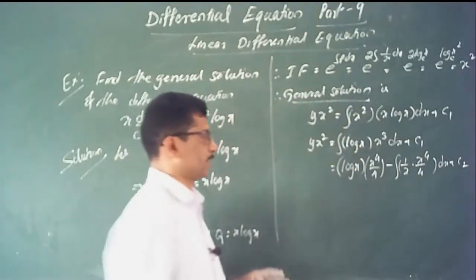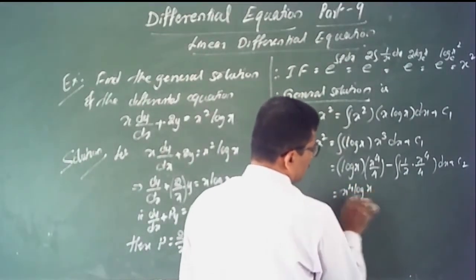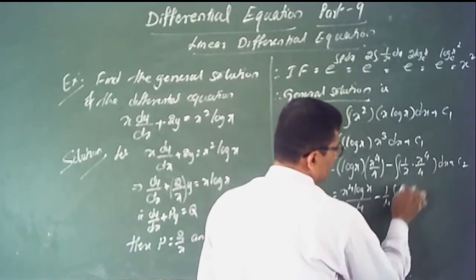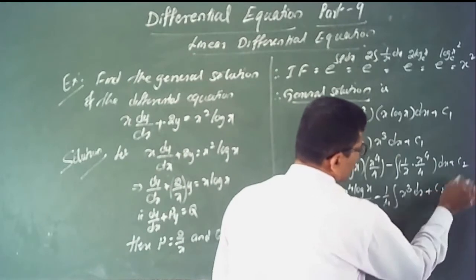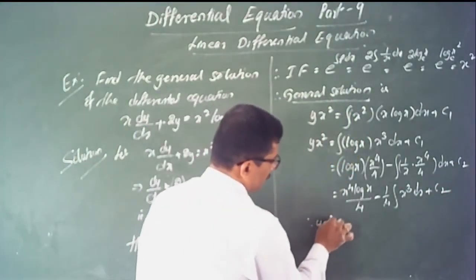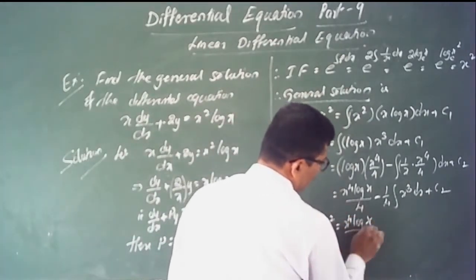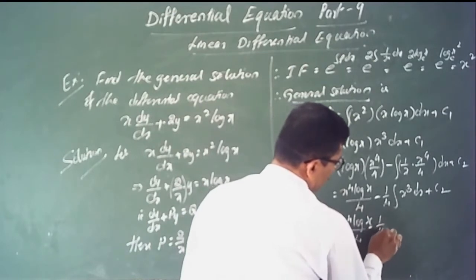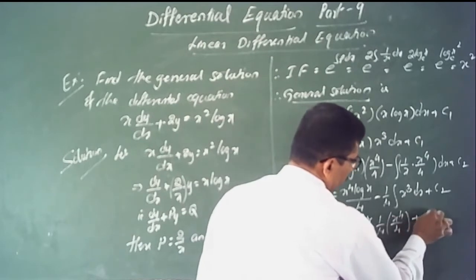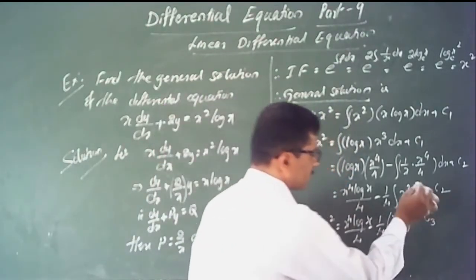Continuing integration by parts: minus the integral of the derivative of log x, which is 1/x, times x to the 4th over 4 dx. This gives x to the 4th times log x divided by 4, minus 1/4 times the integral of x cubed dx, plus constant c2.